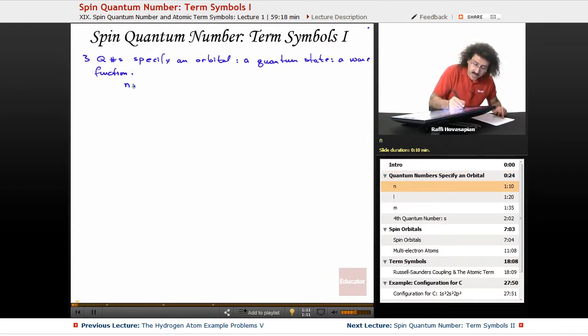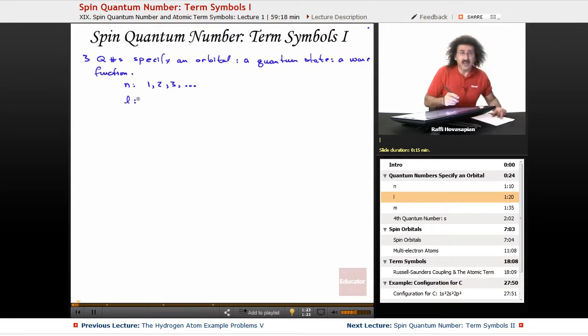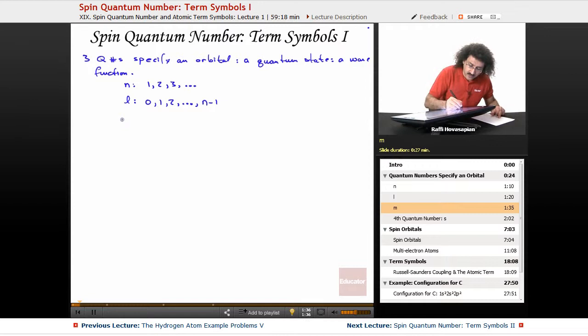We have n, which is the primary quantum number, and n takes the values 1, 2, 3, and so on. And then we have l. L is the angular momentum quantum number, and it takes on the values of 0, 1, 2, all the way up to n minus 1. So l depends on n.